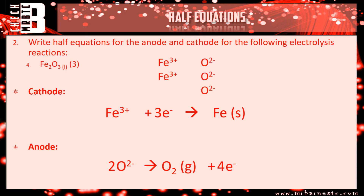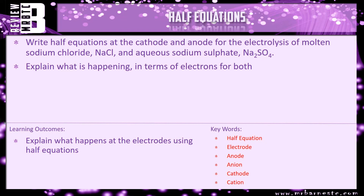That's the end of these questions — hopefully that's made it a little bit clearer. If you're not sure, put a comment below and I can have a chat with you about it. There is a review question: write the half equations at the cathode and anode for the electrolysis of molten sodium chloride (NaCl), and for aqueous sodium sulfate — figure out which ions form at the cathode and anode and explain what is happening in terms of electrons.